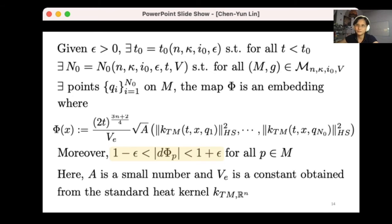You don't have self intersections, and the dφ is bounded by 1 minus ε and 1 plus ε. So this highlighted part tells you that the map is close to an isometry being controlled by ε. And φ is defined through this equation in the middle.